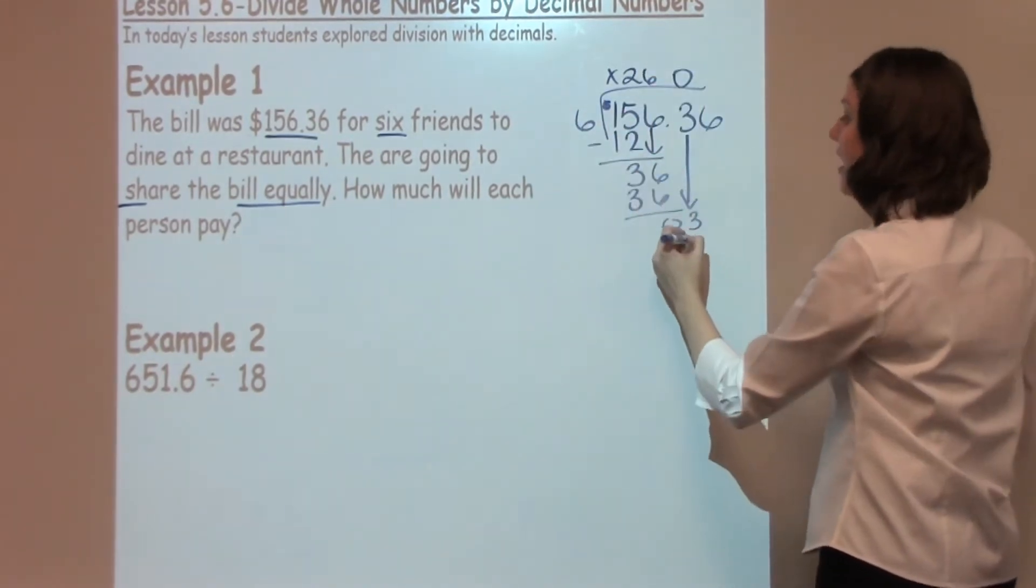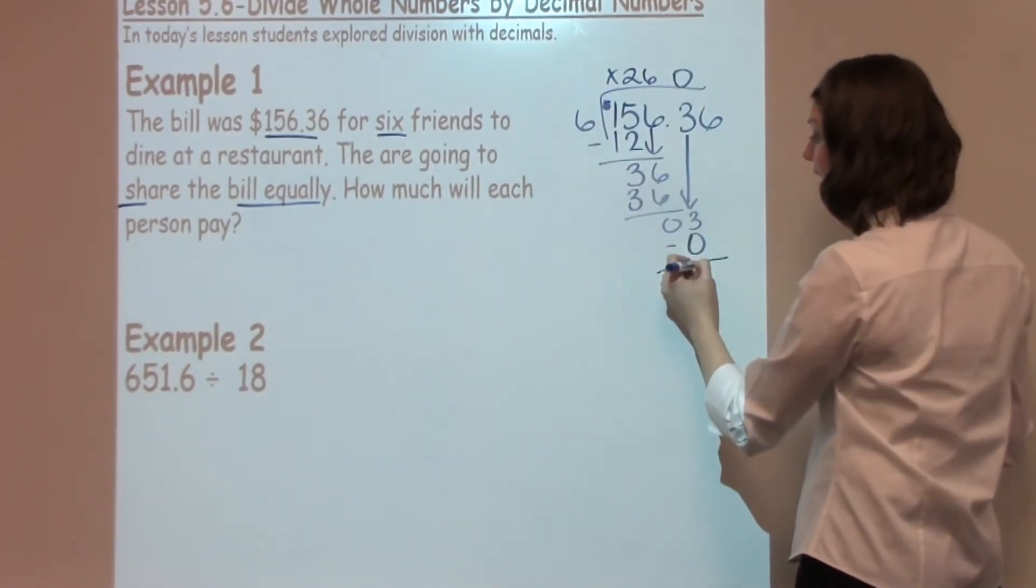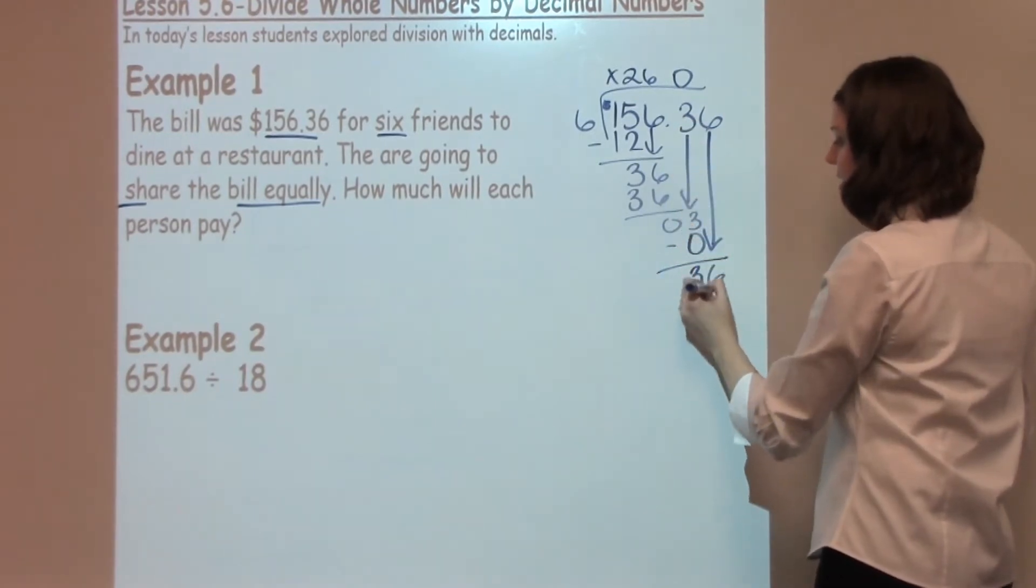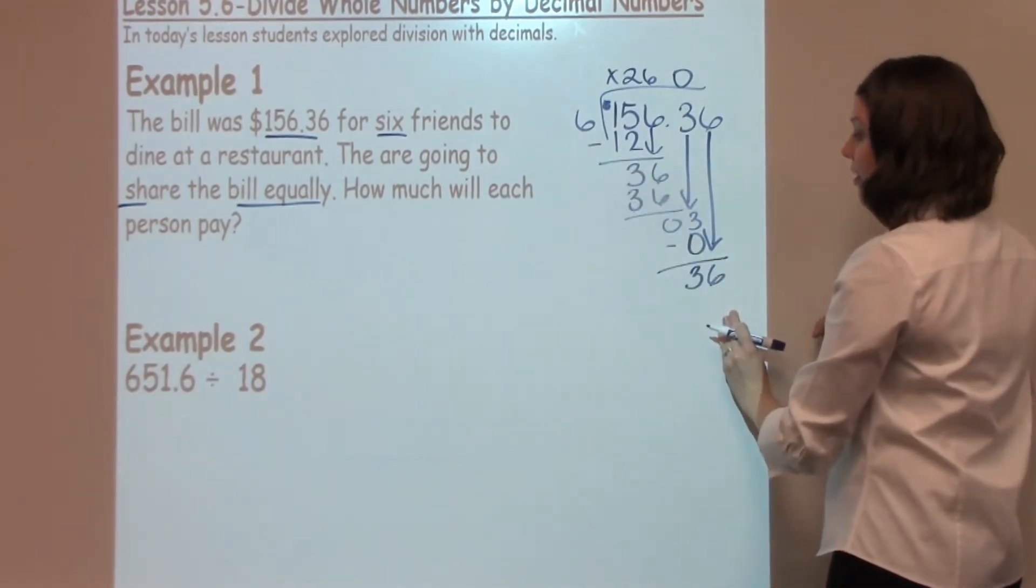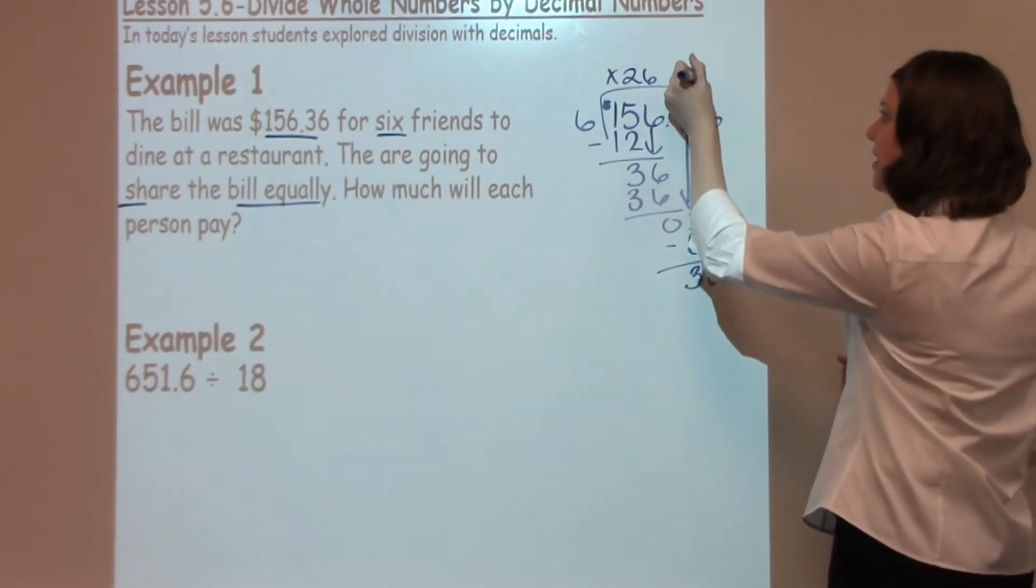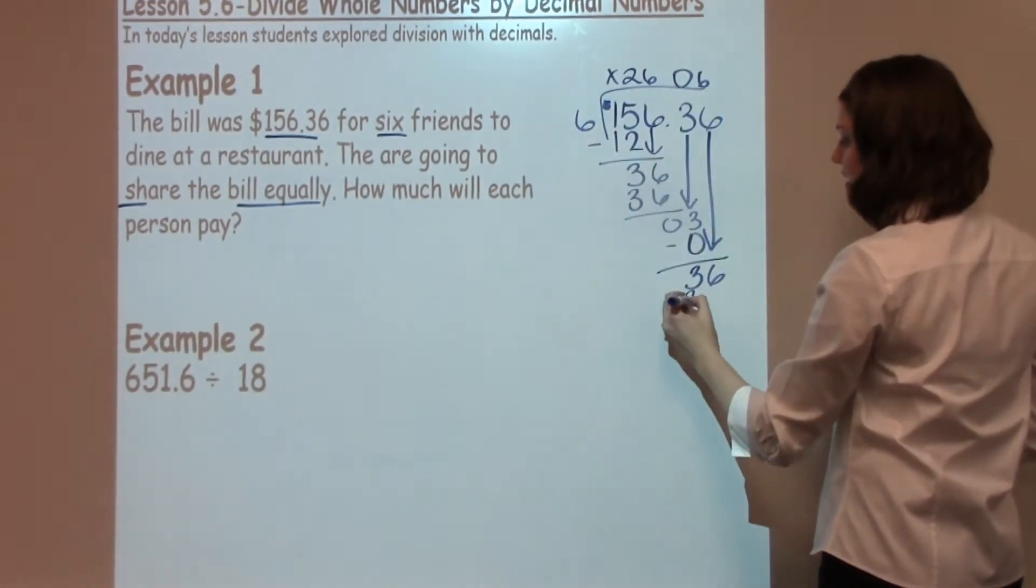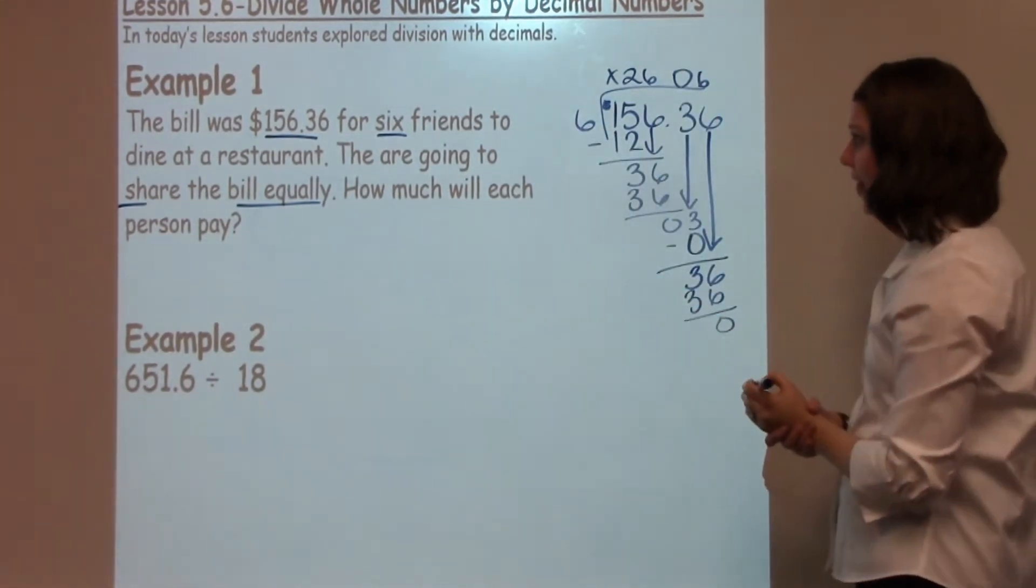Zero times six is zero. When I subtract, I still have three, and I'm going to bring down that six. Can six go into thirty-six? It can. Six times six is thirty-six, with nothing left over.